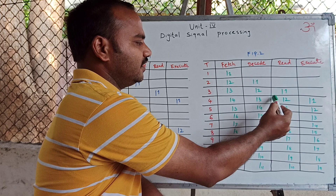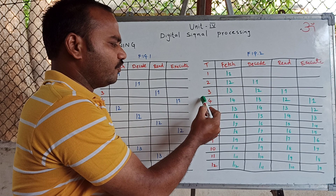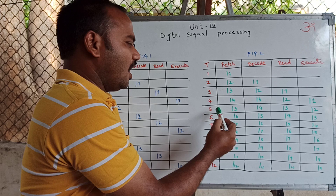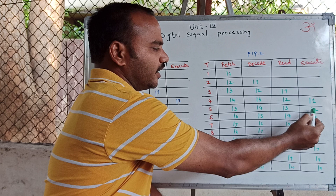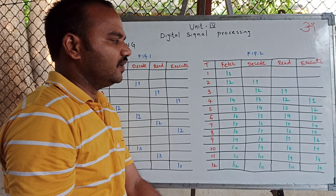In the fourth clock pulse, instruction L1 is executed, instruction L2 is read, instruction L3 enters decode, and instruction L4 is fetched. After four clock pulses, the first instruction L1 is executed. After every subsequent clock pulse, the next instructions are executed: L2 in the fifth clock pulse, L3 in the sixth clock pulse.